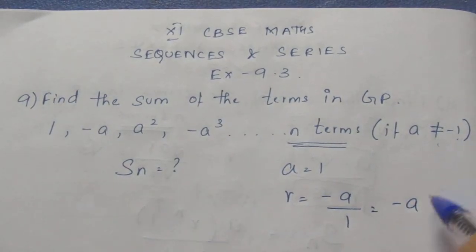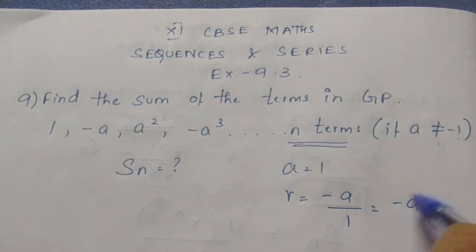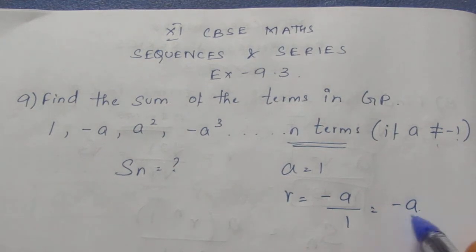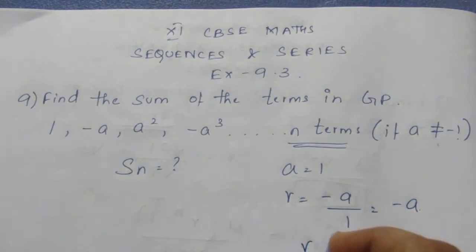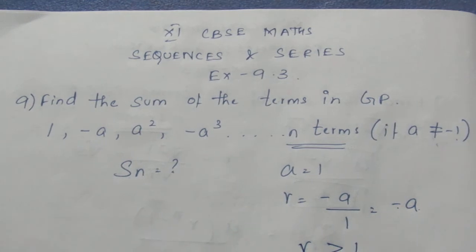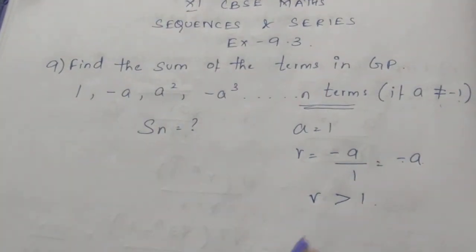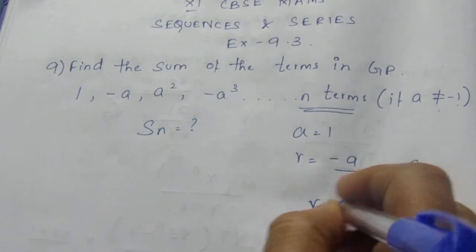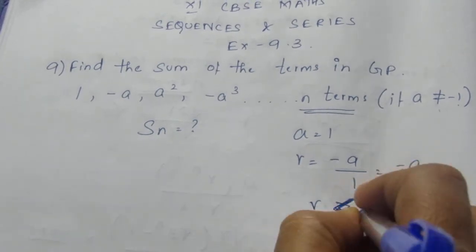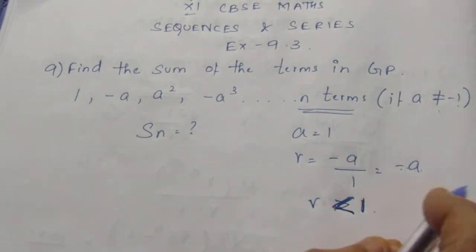We know that a is not equal to 1, then it will be a positive number. If a is a positive number, then r value has a minus sign. Any minus value will be less than 1. So r value is less than 1 because of this negative value.